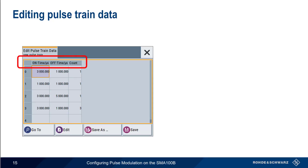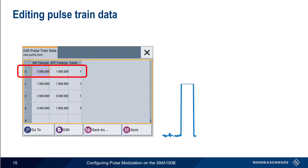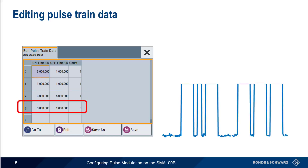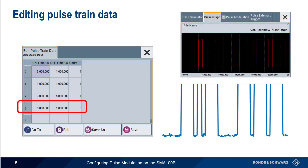Let's build a simple train by starting with a pulse of 3 milliseconds, followed by a delay of 1 millisecond. We then have a 1 millisecond pulse with a 1 millisecond delay, followed by a 3 millisecond pulse with a 5 millisecond delay. The last entry is a 3-millisecond pulse with a 1-millisecond delay, repeated 3 times. And as before, we can use the Pulse Graph to visually inspect our Pulse Train.